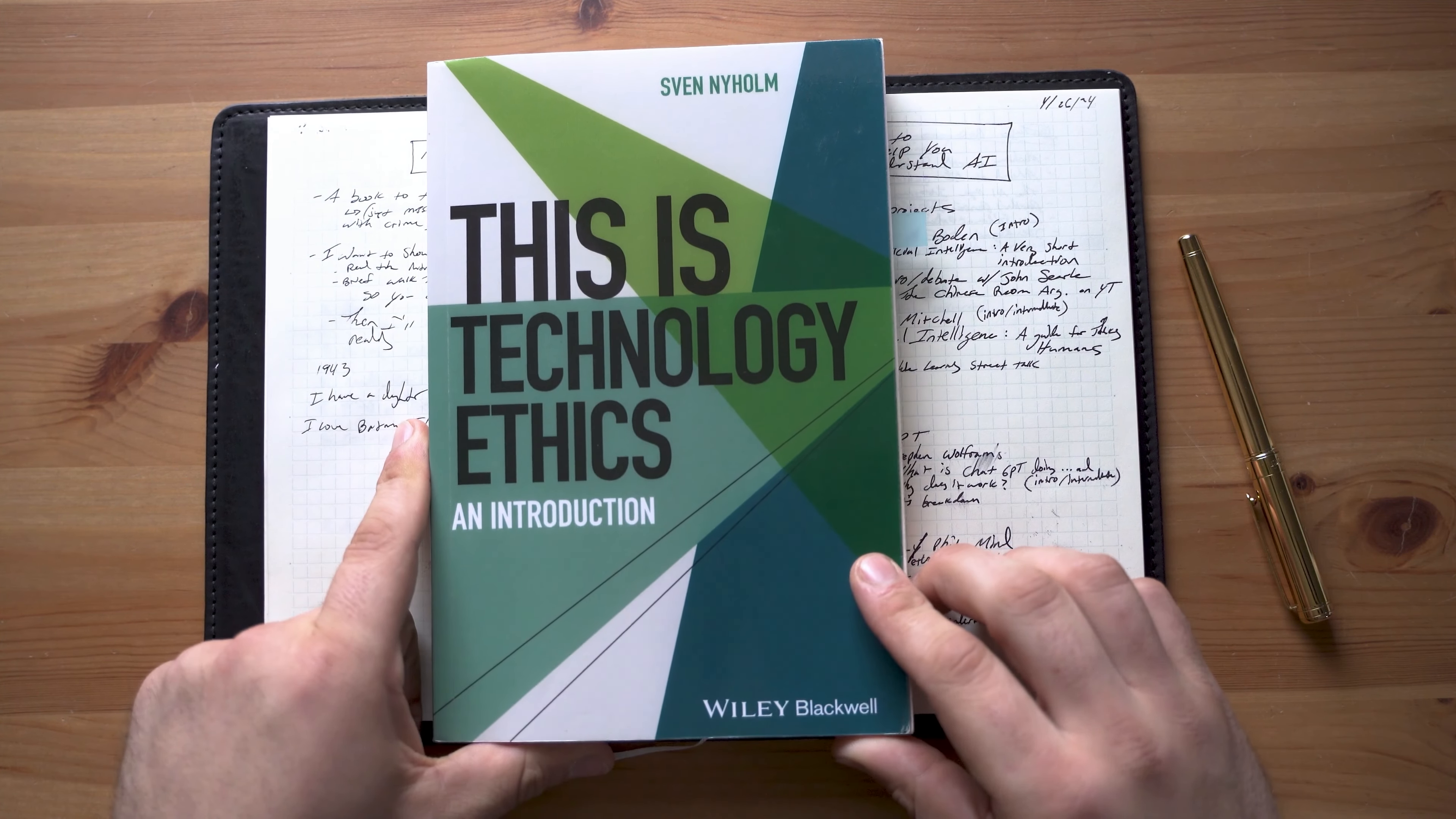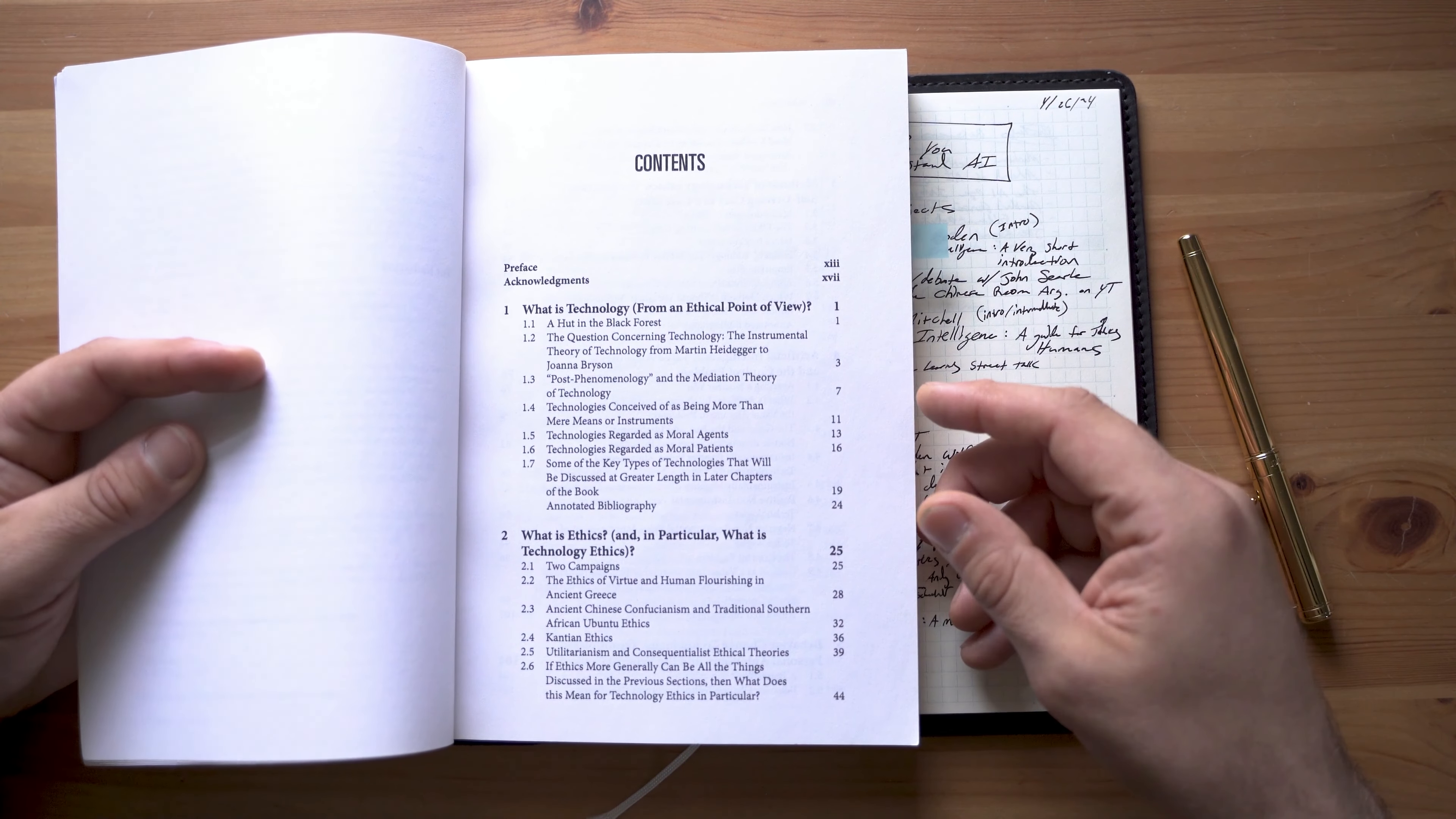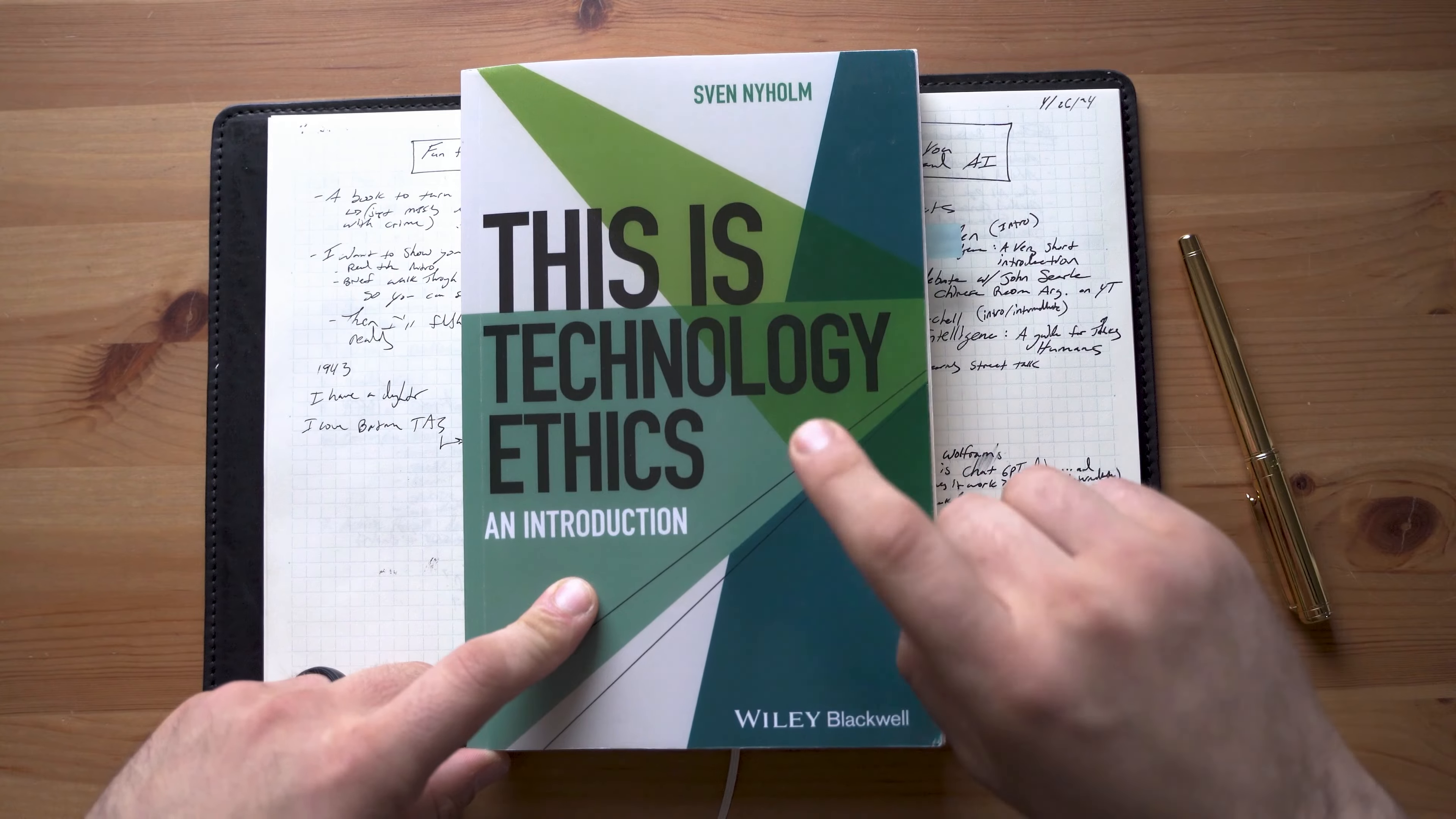Next up we have This is Technology Ethics, an introduction by Sven Nyholm. I've recommended this book before on the channel. Sven's another one who's been on the podcast before like Susan and Ben Gertzel. So maybe I'm biased here, but I love this book. Now this is a philosophy book. It's an ethics book. So it will introduce you to the philosophical dilemmas associated with artificial intelligence, but it will also introduce you more broadly to the philosophy of technology where the philosophy of artificial intelligence is a proper subset. So I highly recommend this book, especially for his treatment of the value alignment problem, the control problem, and some of these transhumanist, post-human type ethical dilemmas. So another great one.